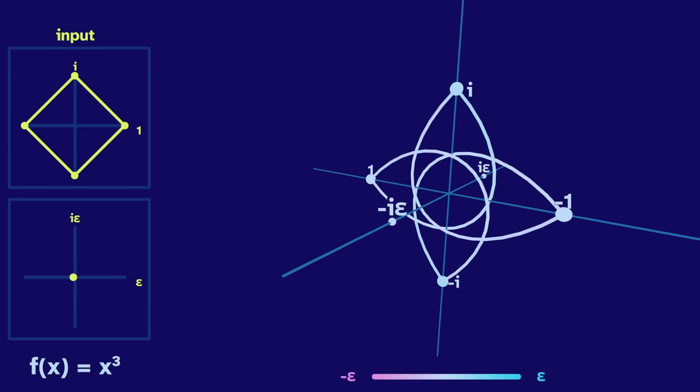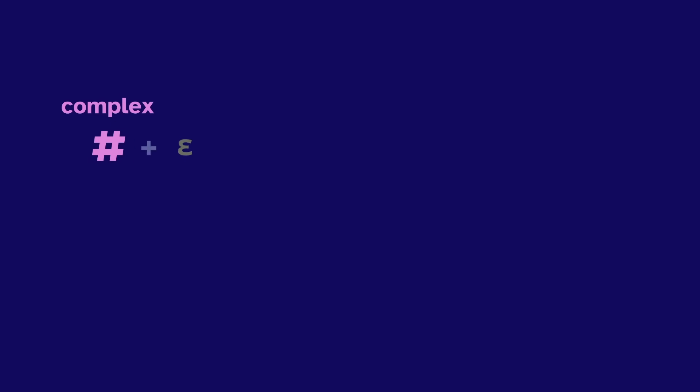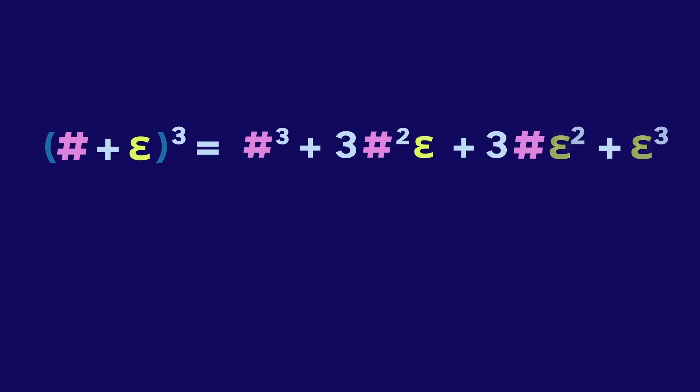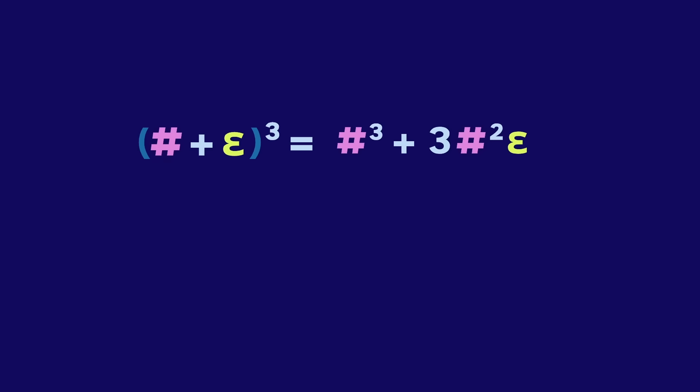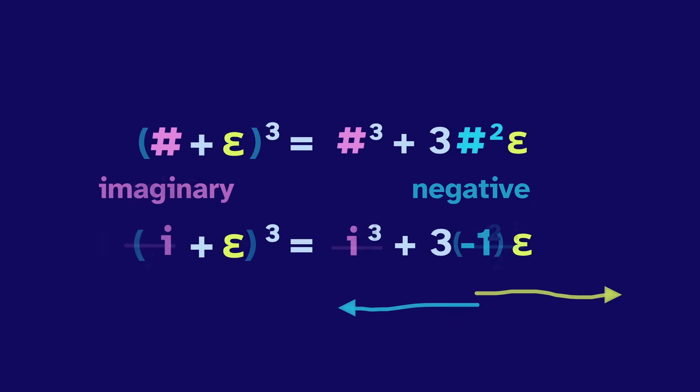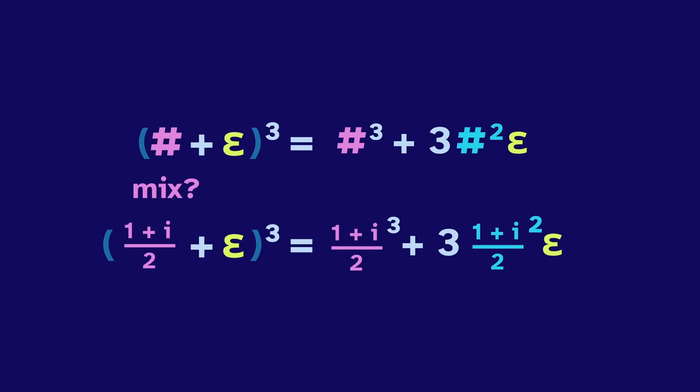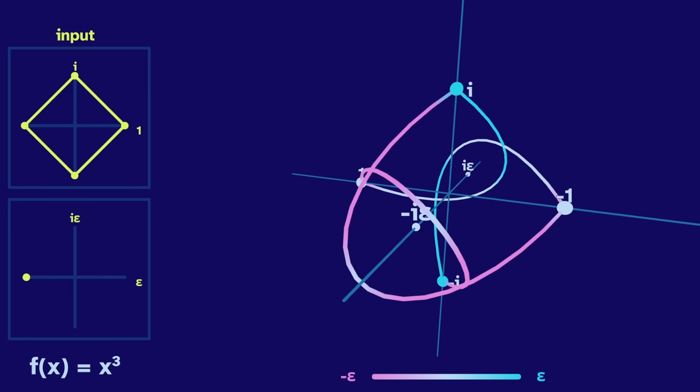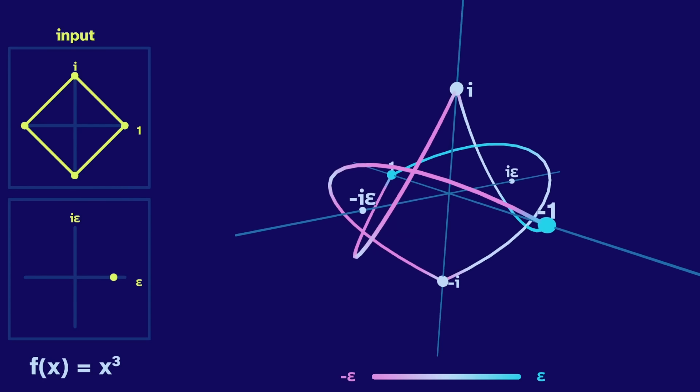If we take some complex number hash plus epsilon, and then cube this, we end up with hash cubed plus three hash squared epsilon. So if hash is real, the square will be positive. It will move in the same direction as epsilon. And if it's imaginary, the square is negative. It will move in the opposite direction. But what if it's a mix, like one plus i over two? This squares to an imaginary, i over two. So it moves in a different dimension, and twice as slow. So when we view the imagidual dimension, it's just the curves that move. They're the points with a mix of real and imaginary.